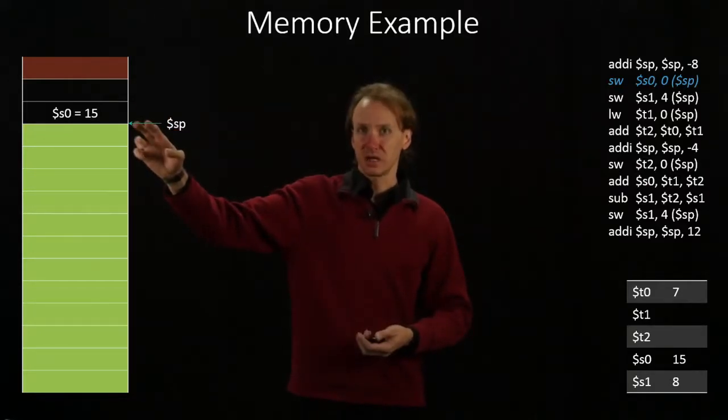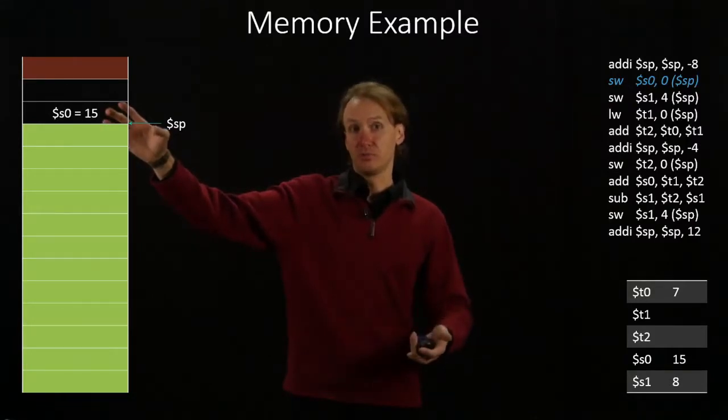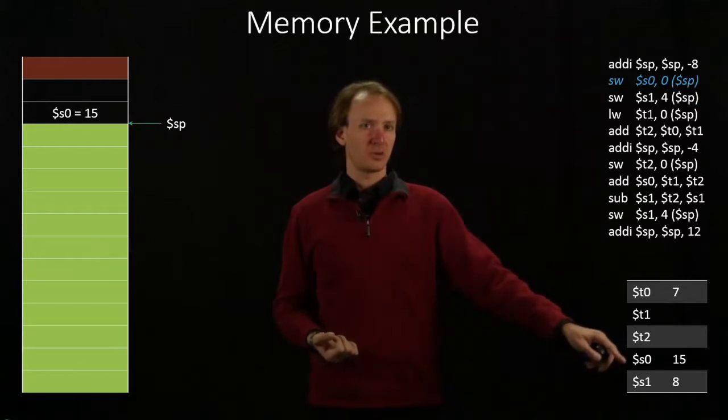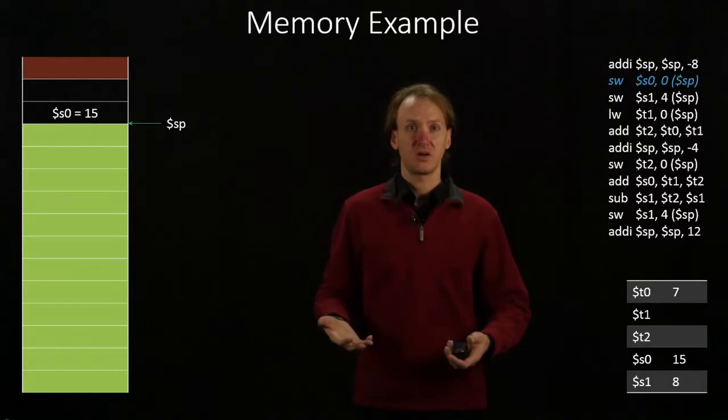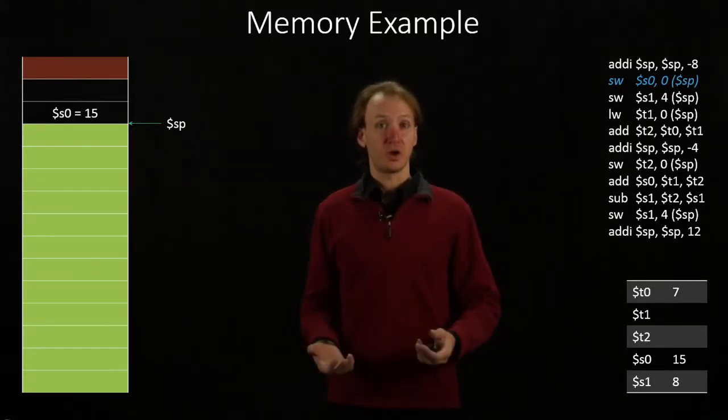So the bytes stack pointer plus 0, stack pointer plus 1, stack pointer plus 2, and stack pointer plus 3 will all be used to hold that value. In this case it's 15, and we know we got it from S0. So I've written that into the memory cell. The memory cell itself only remembers the 15, but this can be useful especially if you've got variables.